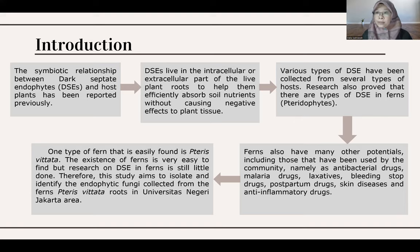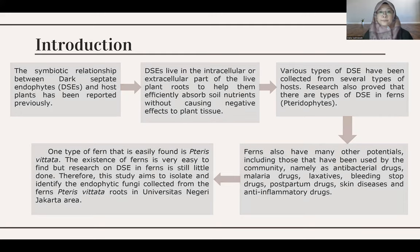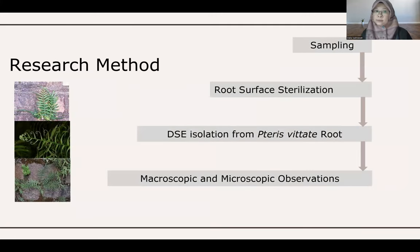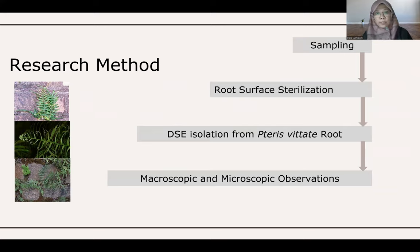Research on the isolation of Dark Septa Endophyte from this fern is very rare. The main objective of this research is the isolation and partial identification of Dark Septa Endophyte from the root parts of Pteris vittata. The method includes sampling, root surface sterilization, isolation of DSE, and both macroscopic and microscopic observation.